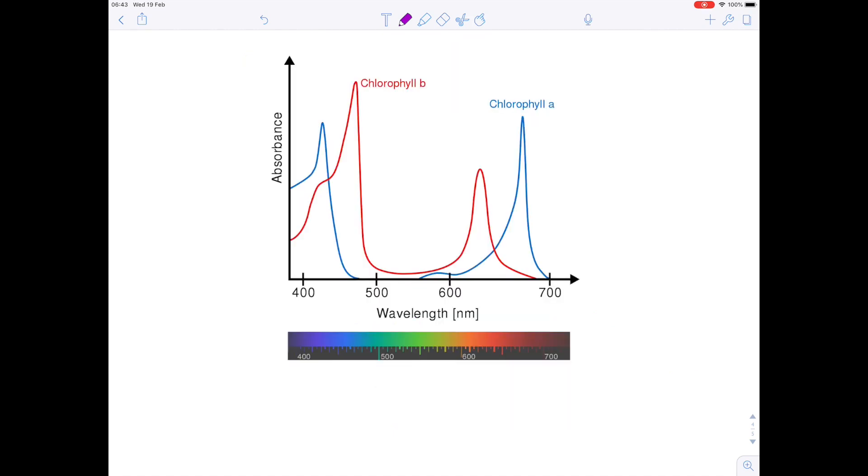We're now going to consider this graph, which is actually an absorption spectrum. Now, I've already mentioned that chlorophyll is the pigment which is responsible for absorbing that light, and the two main types you need to be aware of are the most common. They're chlorophyll A and B.